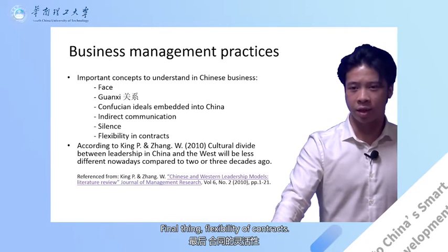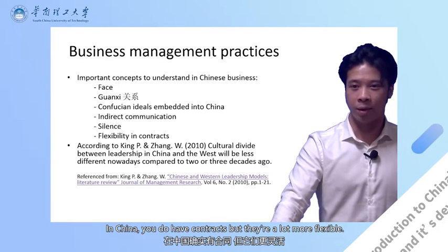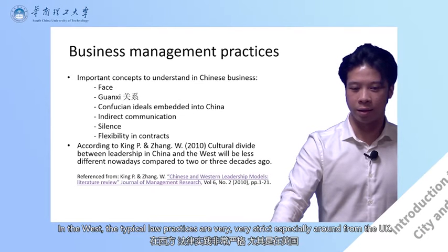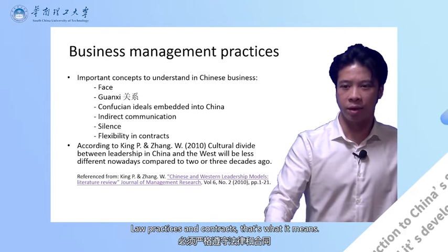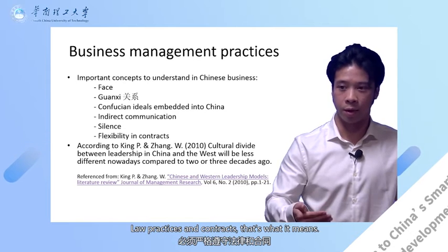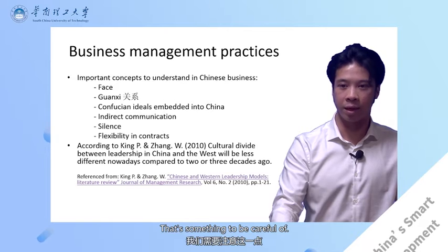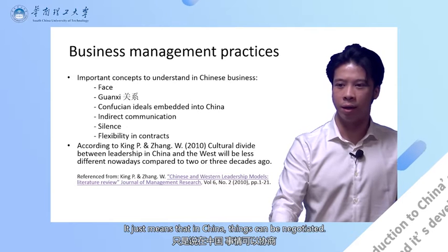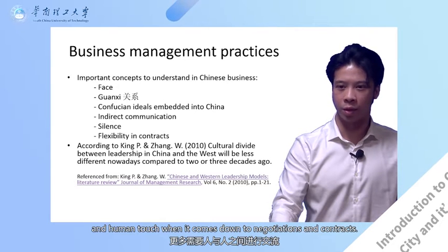The final thing is the flexibility of contracts. In China, you do have contracts, but they're a lot more flexible. In the West, typical law practices are very strict — especially in the UK, contracts really mean exactly what they say. Whereas in China, that's not always the case. It doesn't mean one is better or worse; it just means that in China, things can be negotiated and it's flexible, requiring more of a personal and human touch when it comes to negotiations and contracts.